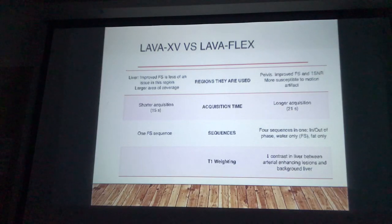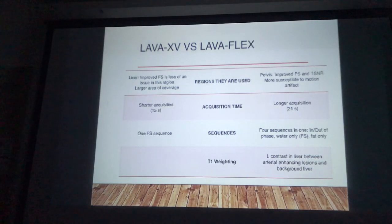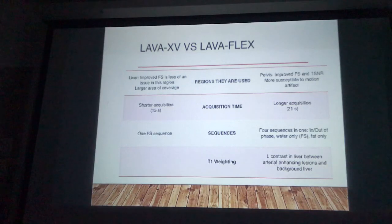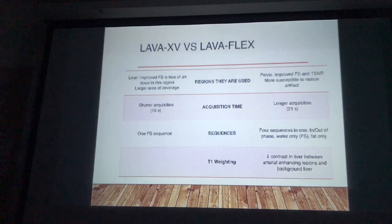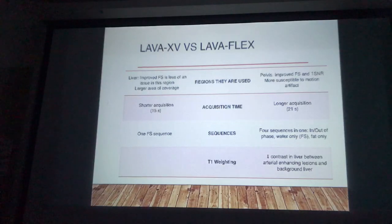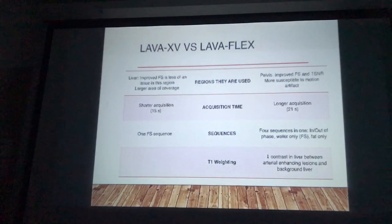We use LavaXV over LavaFlex for improved fat saturation in the liver. LavaFlex imaging actually decreases the contrast in the liver between arterial enhancing lesions and the background liver. That's the reason we use LavaXV over LavaFlex — the downside of LavaFlex is that we aren't getting that T1 weighting. So after contrast administration, radiologists aren't able to as accurately determine whether there's actually an enhancing lesion in the liver, or if it's just a shadow or some obscurity they can't distinguish.